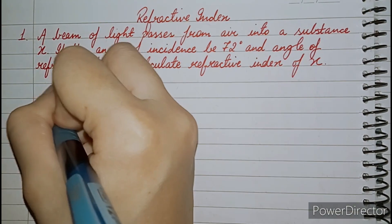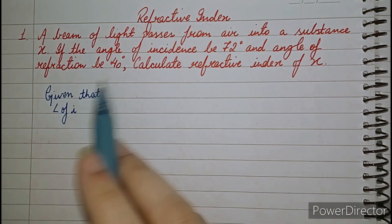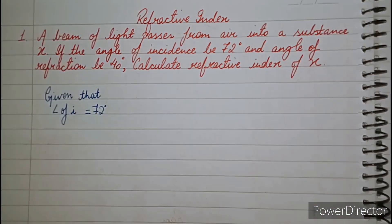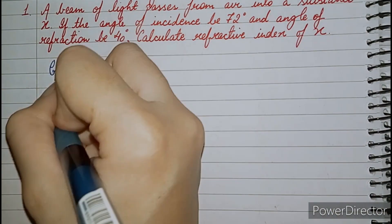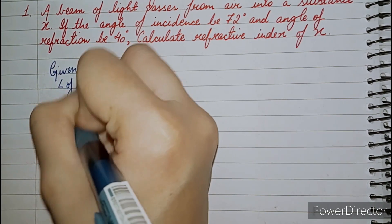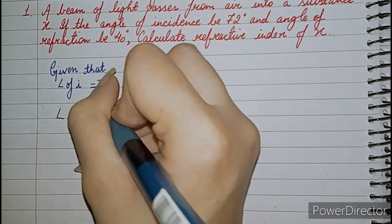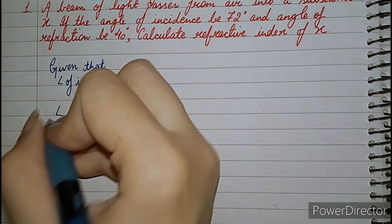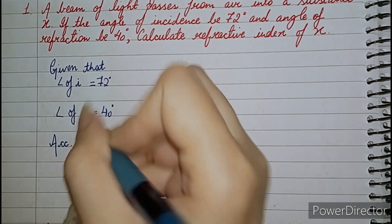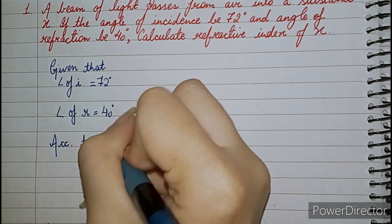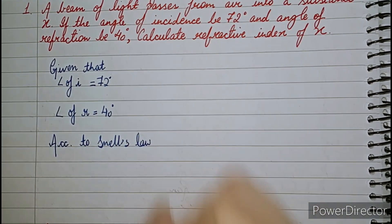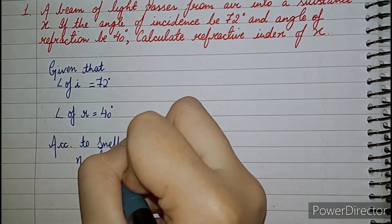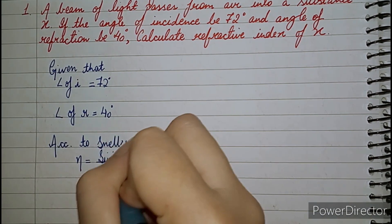Given: angle of incidence is 72 degrees and angle of refraction is 40 degrees. Now according to Snell's law, there is a formula: the refractive index is equal to sin I upon sin R.